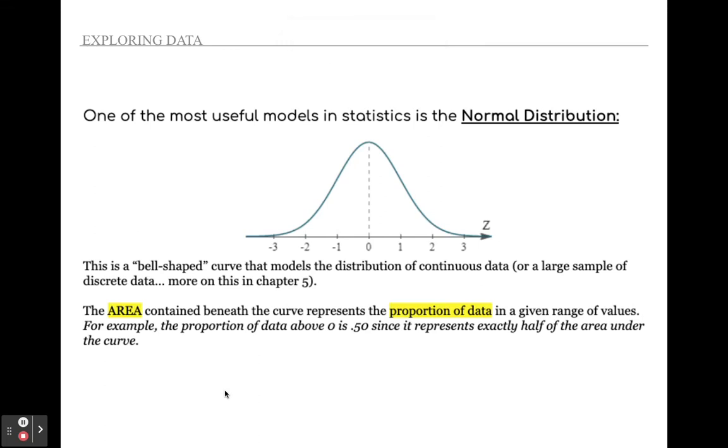Here's part three. This is going to be a quick one because we're going to talk a lot more about normal distributions in later chapters. But one of the most useful mathematical models in statistics is the normal distribution. This is the idea of the bell curve, which you may have heard of in other courses or just in your life.